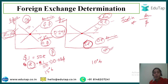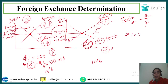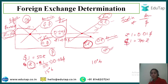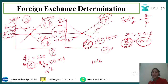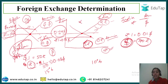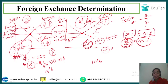With demand for dollars increasing and supply of rupees increasing, the exchange rate shifts. Now 1 dollar equals 70 rupees, and 1 rupee equals 0.01 dollars. Can you tell which currency has appreciated and which has depreciated? We are giving more rupees per dollar, so the dollar has appreciated, and the rupee has depreciated.